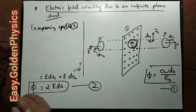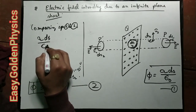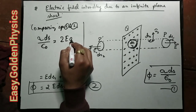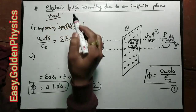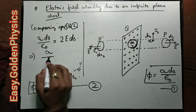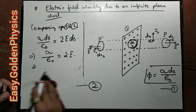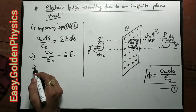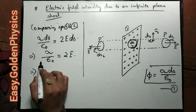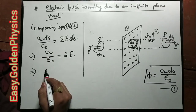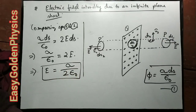Comparing equations 1 and 2: equation 1 gives sigma times ds divided by epsilon naught, which equals 2 times E times ds. The ds terms cancel, giving sigma divided by epsilon naught equals 2 times E. Therefore E equals sigma divided by 2 epsilon naught. This is the electric field at point P.